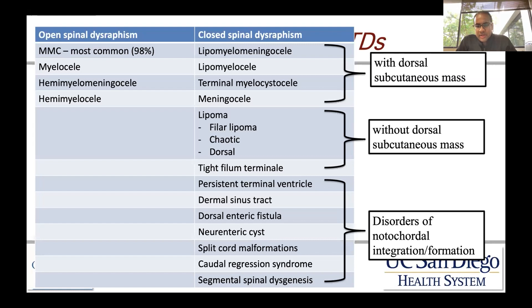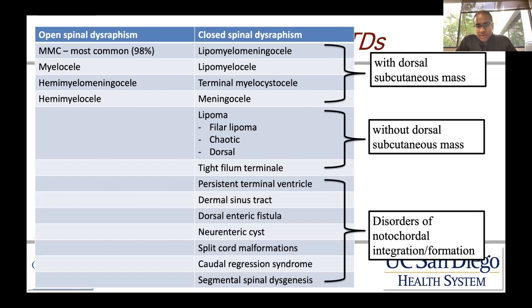Disorders of the notochord include a persistent terminal ventricle, a dermal sinus tract, a dorsal enteric fistula, a neuroenteric cyst, a split cord malformation, caudal regression syndrome, and segmental spinal dysgenesis.